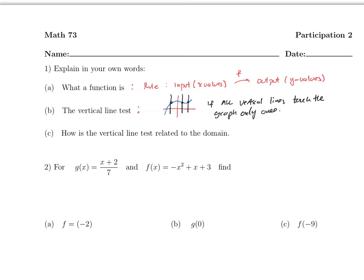How is the vertical line test related to the domain? Remember, the domain contains the input values, and the output or y values is also called the range. What the vertical line test says is pretty simple: the y values can repeat, but the x values cannot repeat. So the vertical line test is related to the domain in that form.